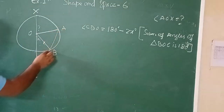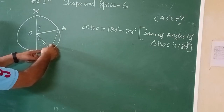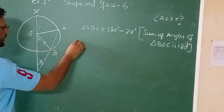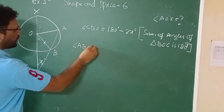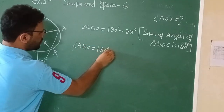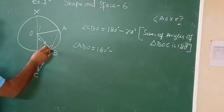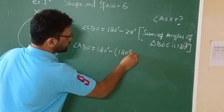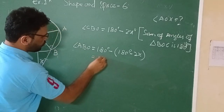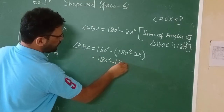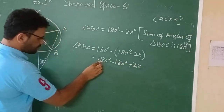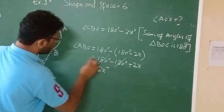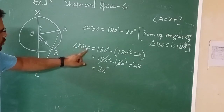Since ABC is a straight line, the sum of angles on a straight line is 180 degrees. So angle ABO equals 180 degrees minus angle CBO. That is 180 degrees minus (180 minus 2x), which equals 180 minus 180 plus 2x, giving us angle ABO equals 2x.